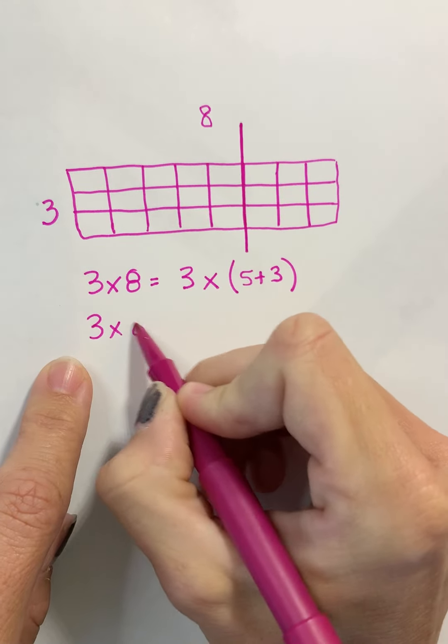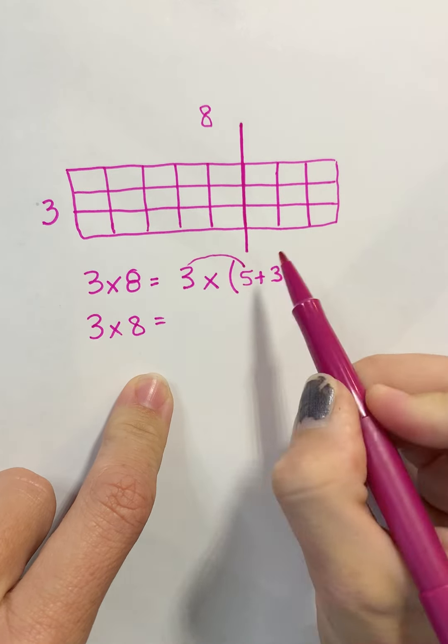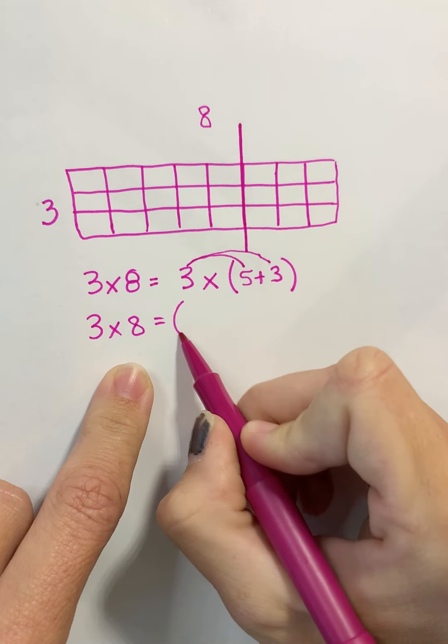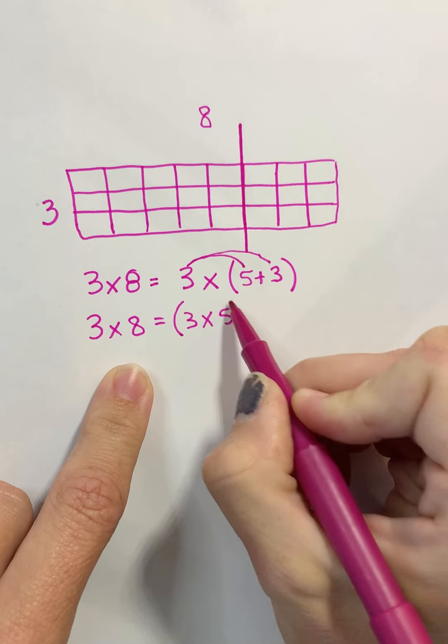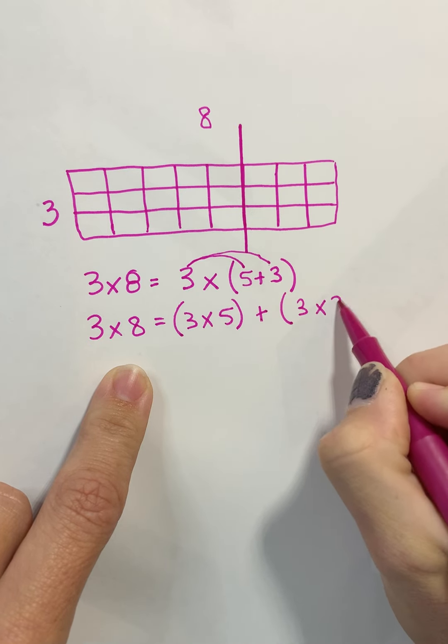The next step would be they're gonna take this 3 and then you need to multiply it by the 5 and then you need to multiply it by the 3. So they're gonna do 3 times 5 plus 3 times 3.